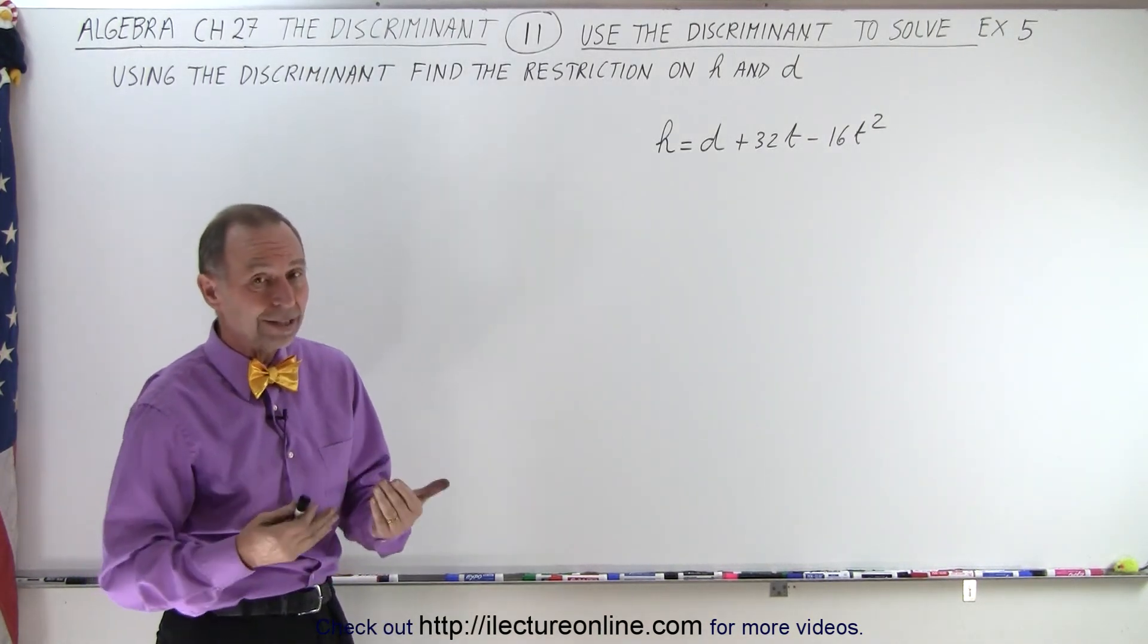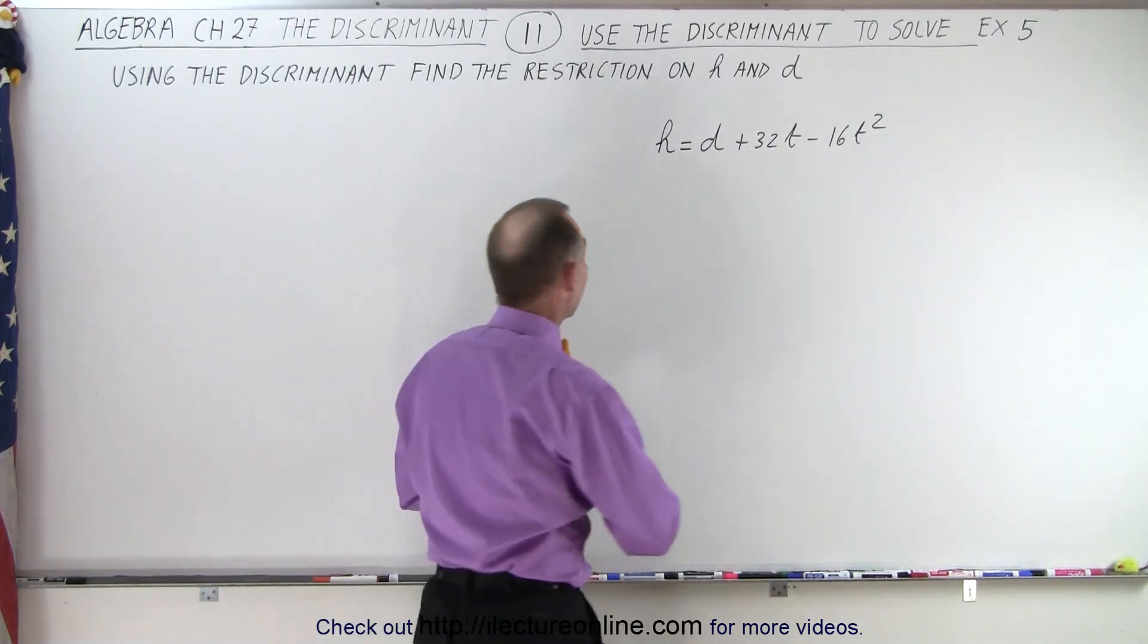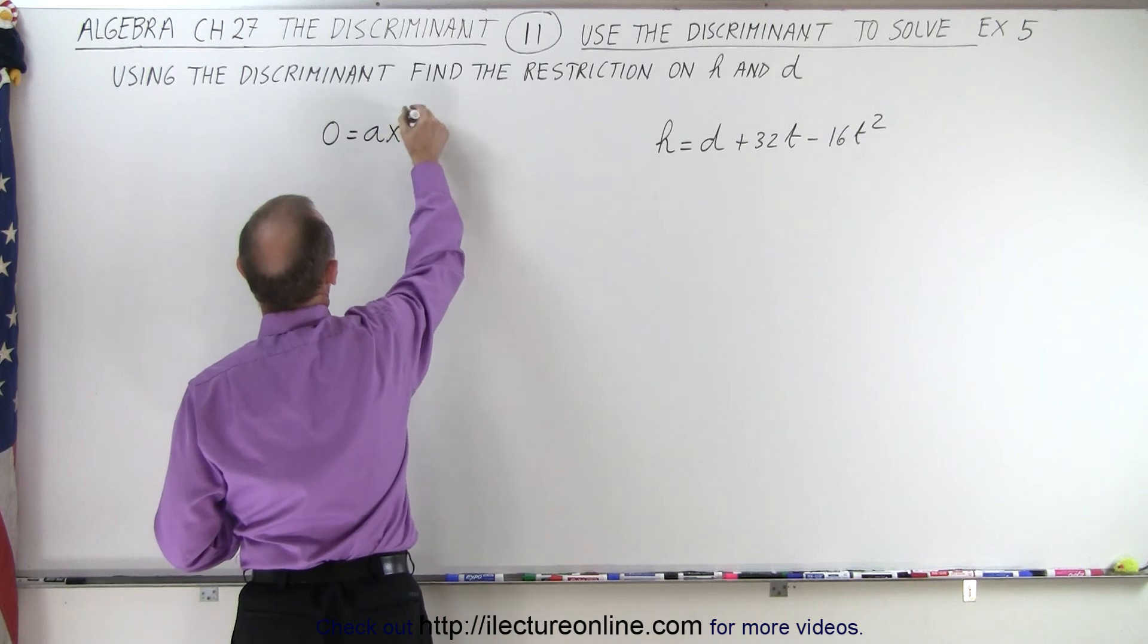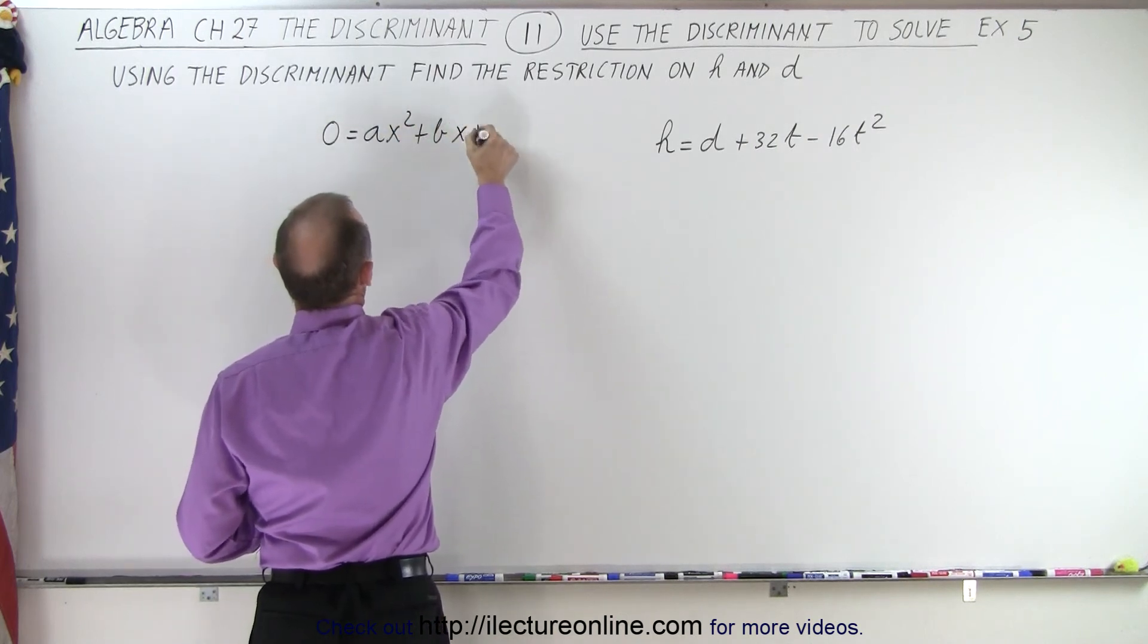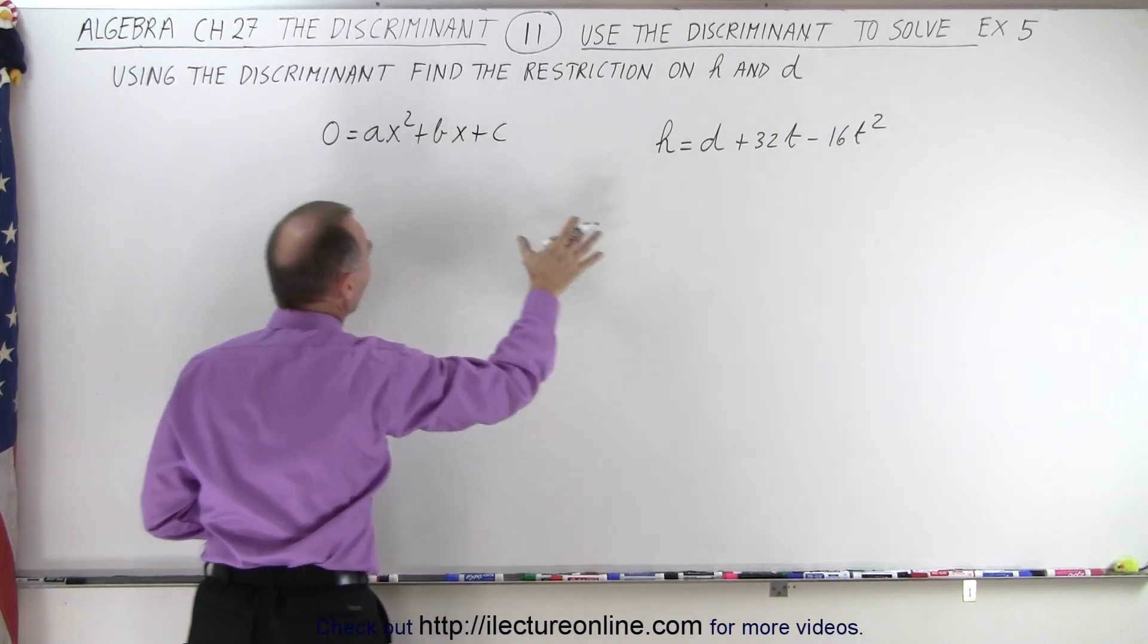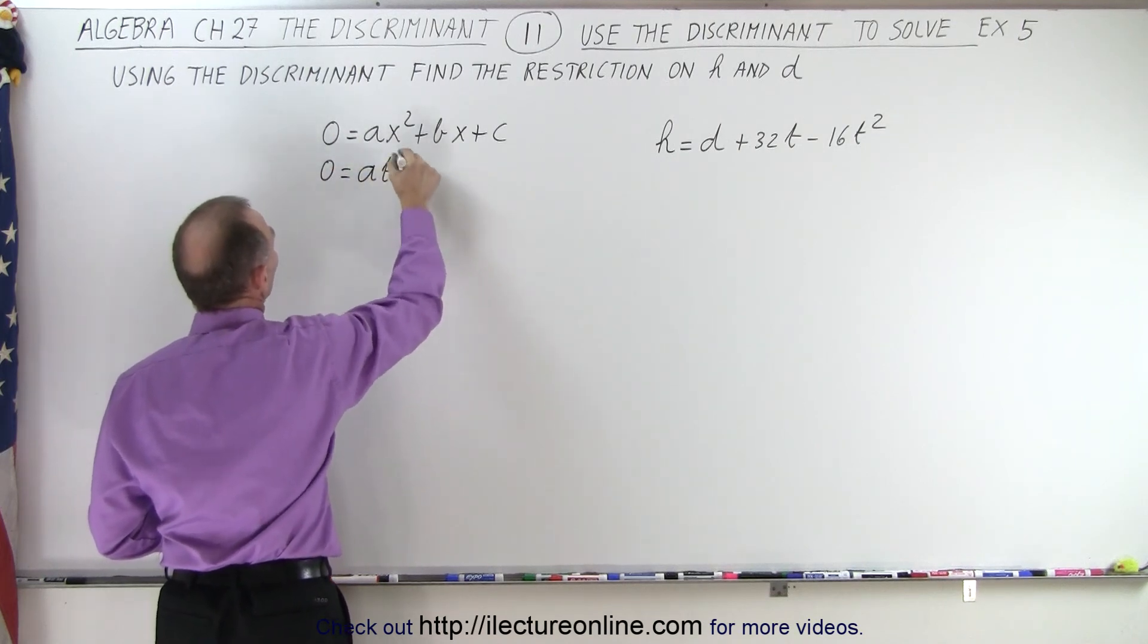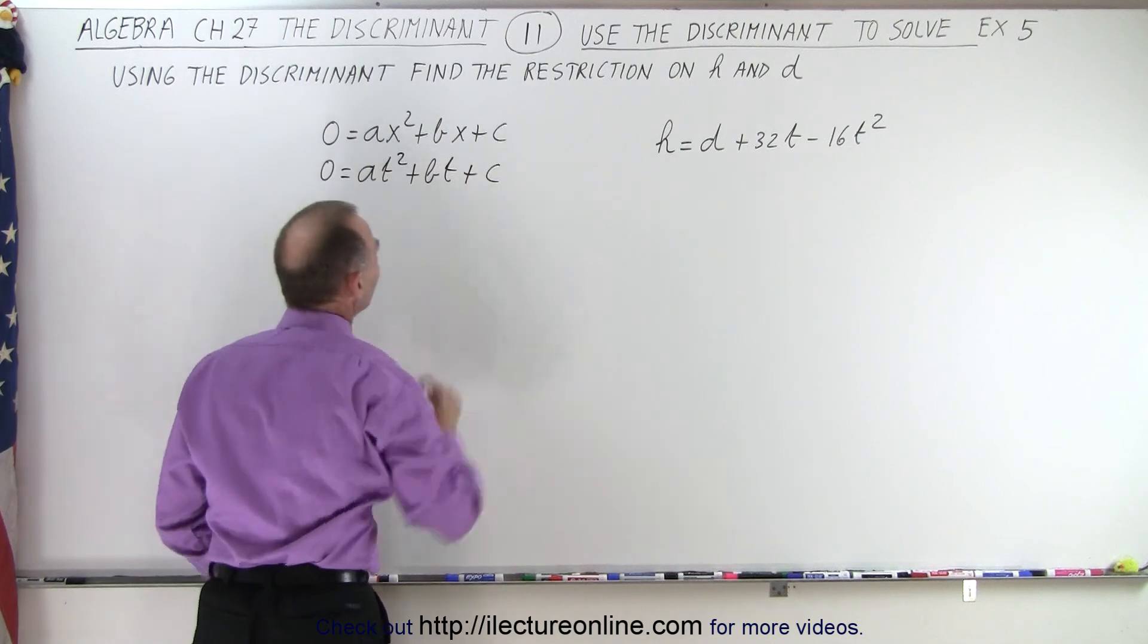And so what we're going to do is rewrite the equation in this format where we have 0 is equal to ax squared plus bx plus c. And of course, in this equation, the variable is t. So we can say 0 equals at squared plus bt plus c.